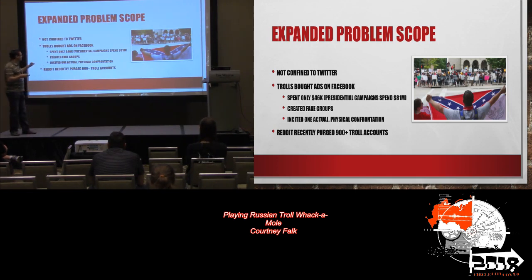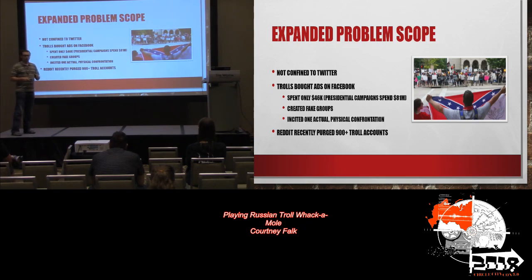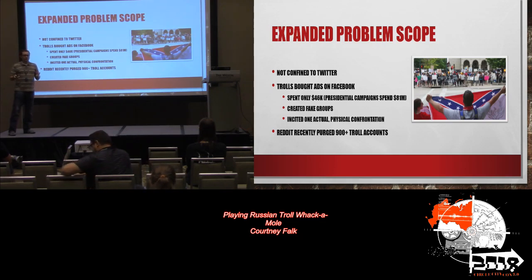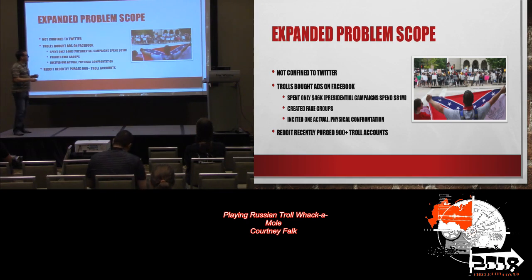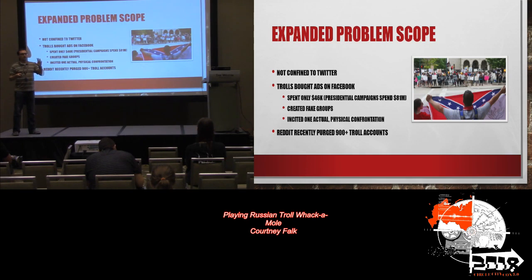I'm specifically looking at Twitter in my NLP research right now, but this isn't confined to Twitter — it's on Reddit and Facebook too. The numbers I saw were that the trolls spent $46,000 on Facebook ads while the two presidential candidates spent $81 million. So they spent roughly the cost of a low-end luxury sedan and achieved very effective results. This here is an actual physical confrontation they incited in Texas.